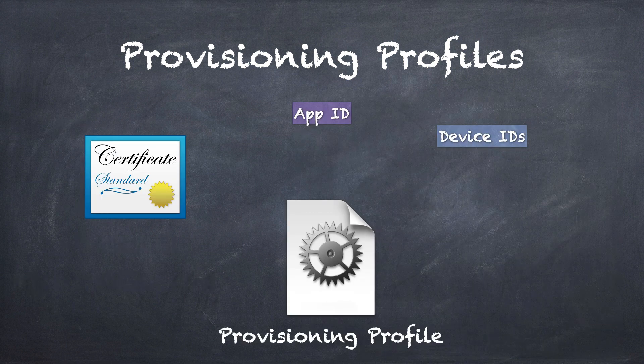Provisioning profiles: at this point, you must be wondering why we need to know all the above things in order to understand provisioning profiles. The short answer is, provisioning profiles are the combination of all the things that we have seen so far. Basically, it consists of everything from certificates, app ID, device ID, and entitlements.